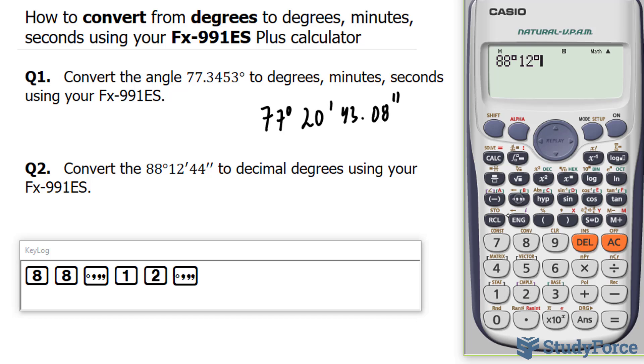So 12 minutes, 44 seconds. You need to input it this way. Once you do that, you click equal sign, and it will show you what you've just written in.